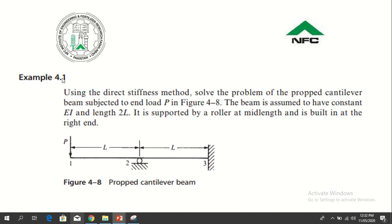Now we will start example 4.1 and use the previous expression in this example. Using direct stiffness method, solve the problem of the propped cantilever beam subjected to end load P in the figure. The beam is assumed to have constant EI and length is equal to 2L.